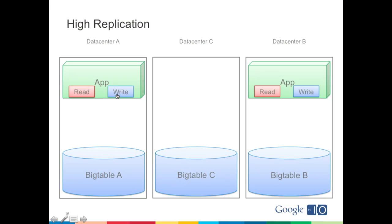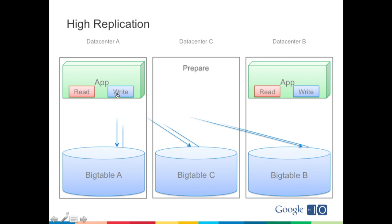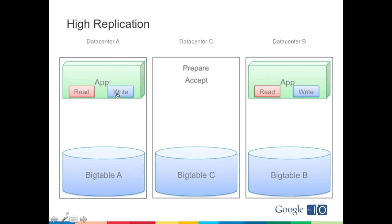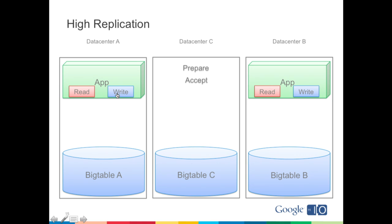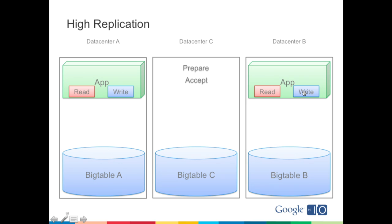Writes are complicated — there are two phases. The first phase is a prepare, and the second stage is an accept, which actually sends out the payload — your entity to write. This write talks across data centers to all replicas synchronously. As long as a majority of data centers accept that write, the write succeeds. In Master-Slave, one Bigtable had all the data. In High Replication, there's no guarantee that any single replica has all your data at any given time. Also importantly, there's no master, so we can run apps in multiple data centers — an app in data center B can read and write to all of these Bigtables simultaneously, and everyone sees consistent views.